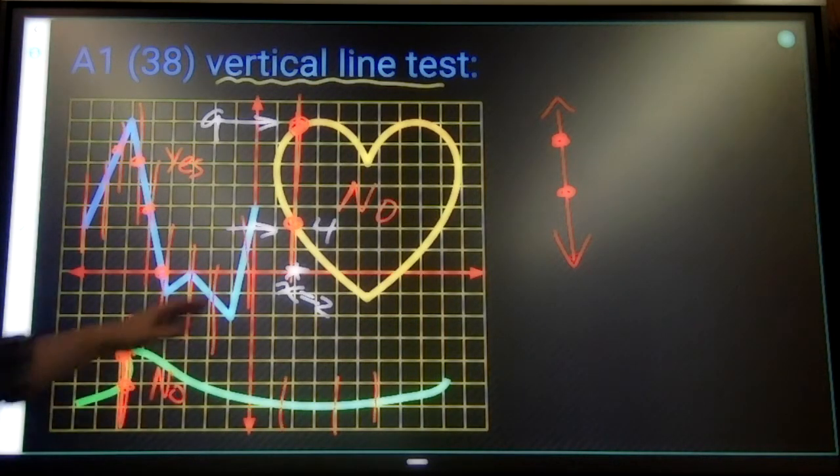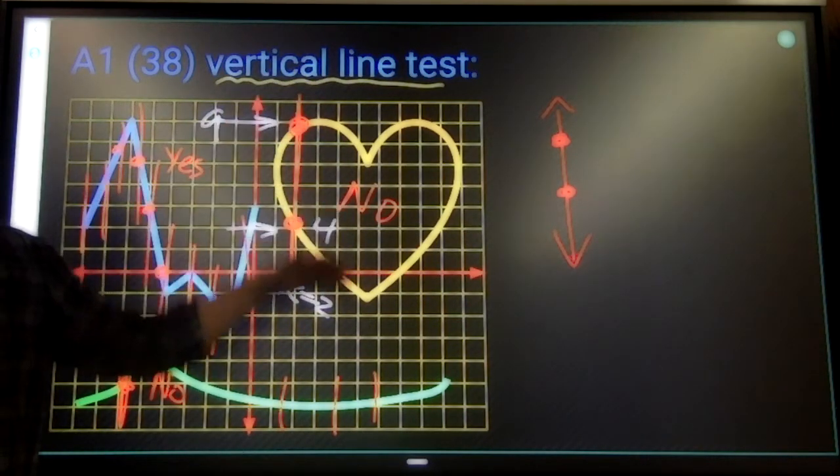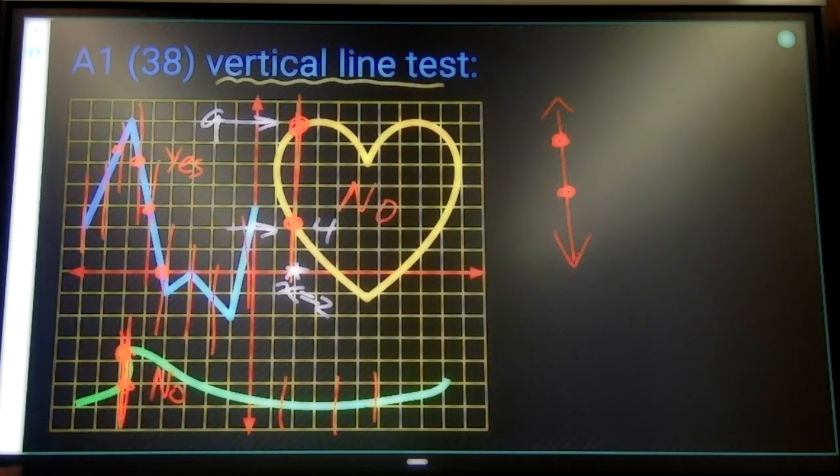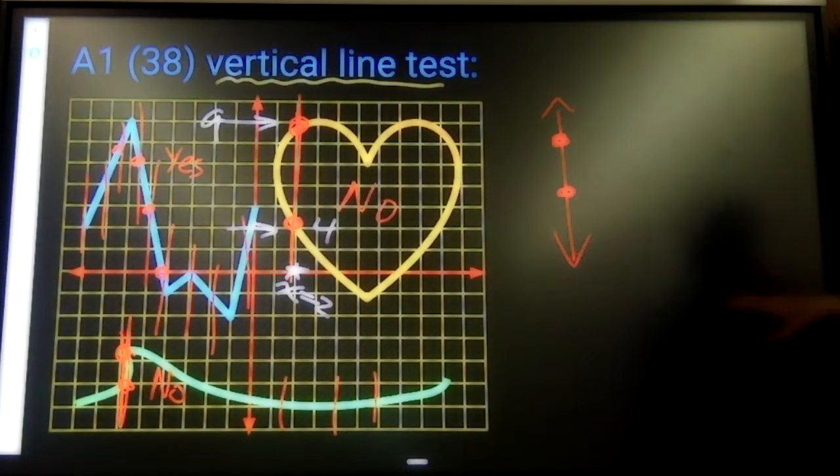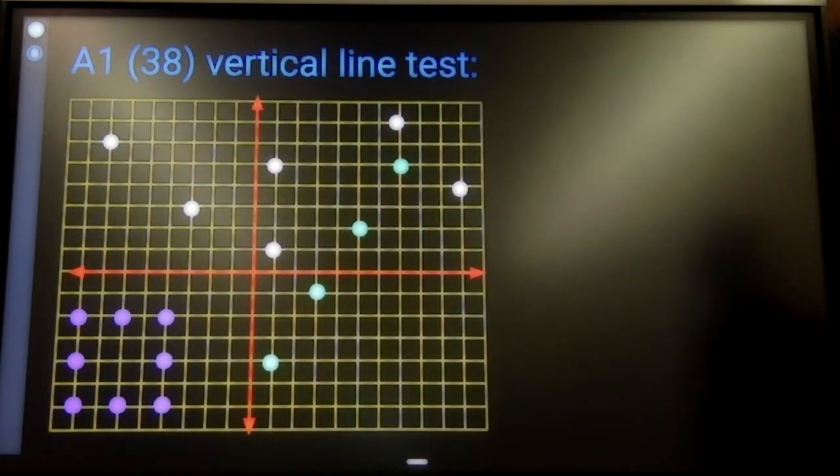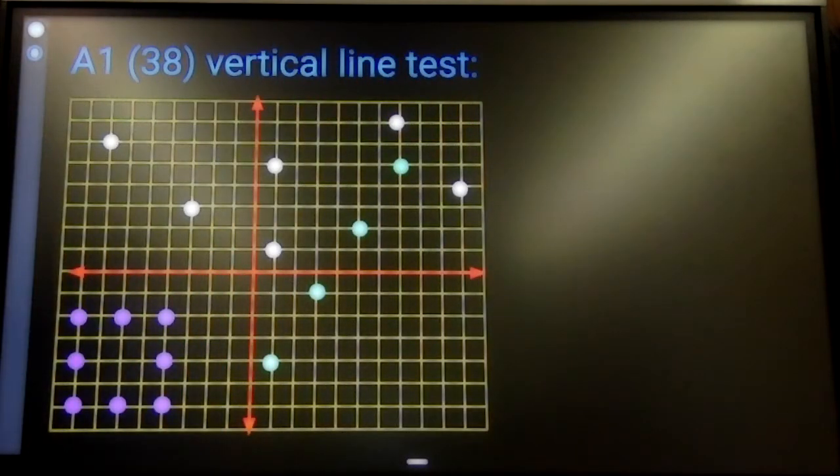If I can give you an x value and you don't know which y value to choose, then we don't have a functional situation. Let's look at a couple other contexts. All the same contexts that we looked at last time. Points on the graph. You tell me which ones are functions, which ones aren't.